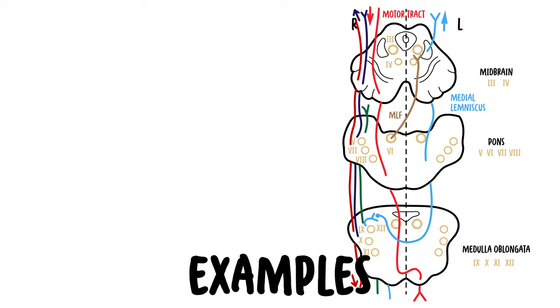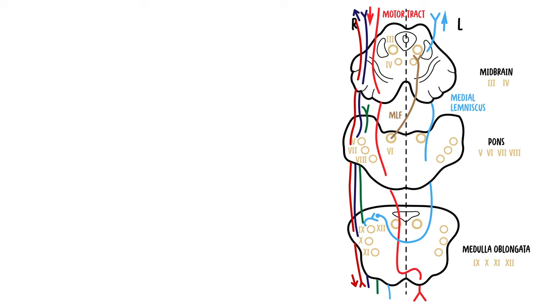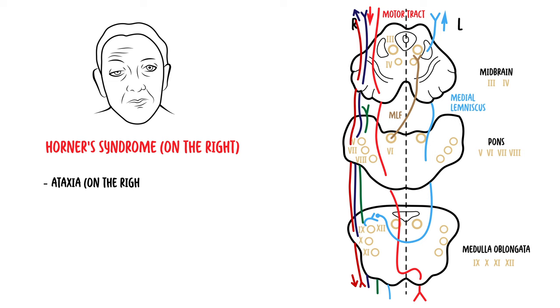So let's try to incorporate the rules of four by looking at some examples. There is an old man that comes in with sudden Horner's syndrome on the right. They also have ataxia on the right, loss of facial sensation on the right, loss of temperature and pain sensation on the contralateral side of the body, in the arms and in the legs, and also they have dysarthria and dysphagia.